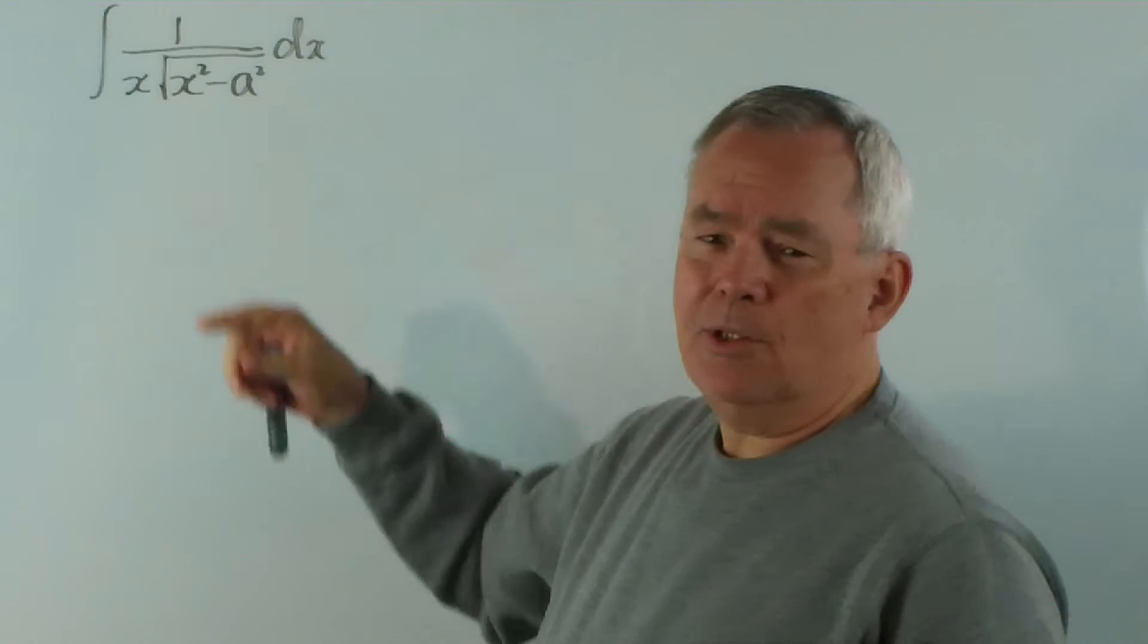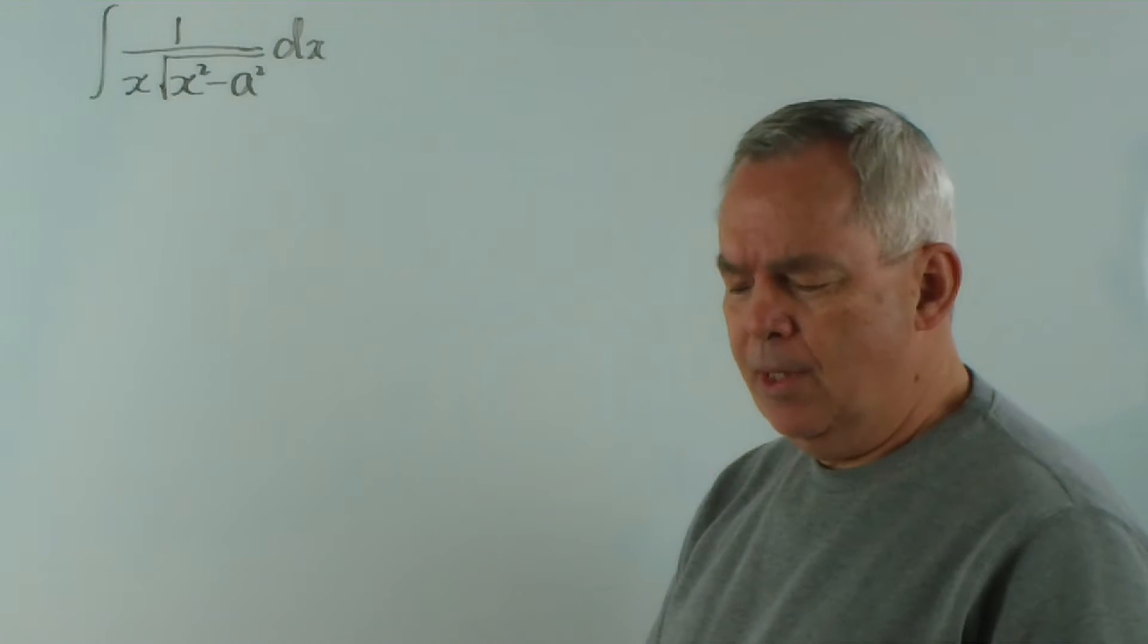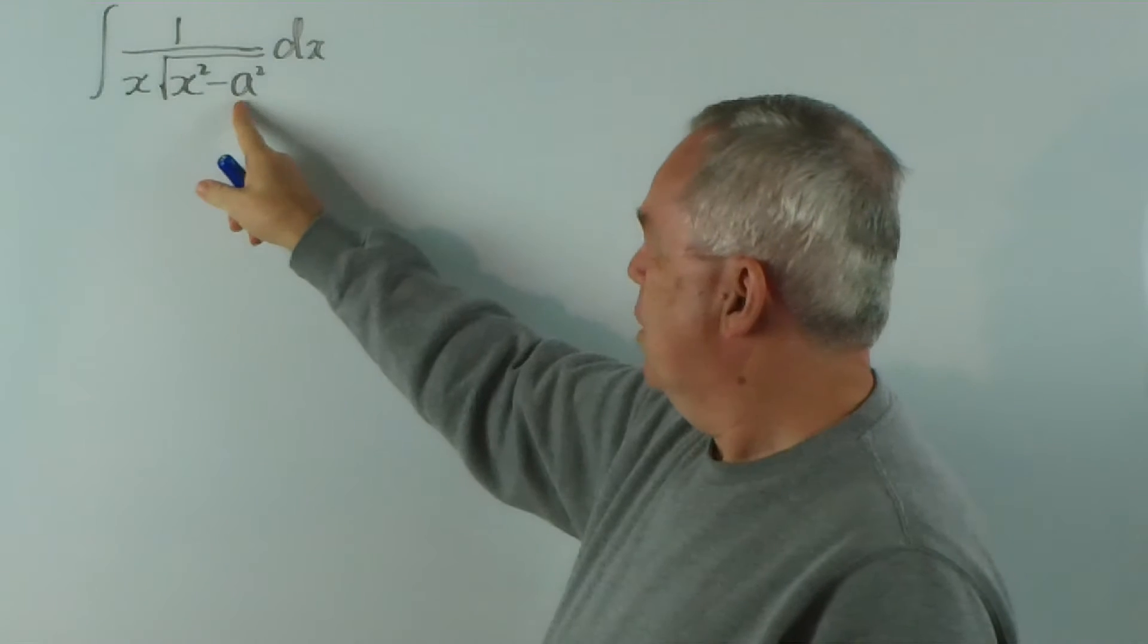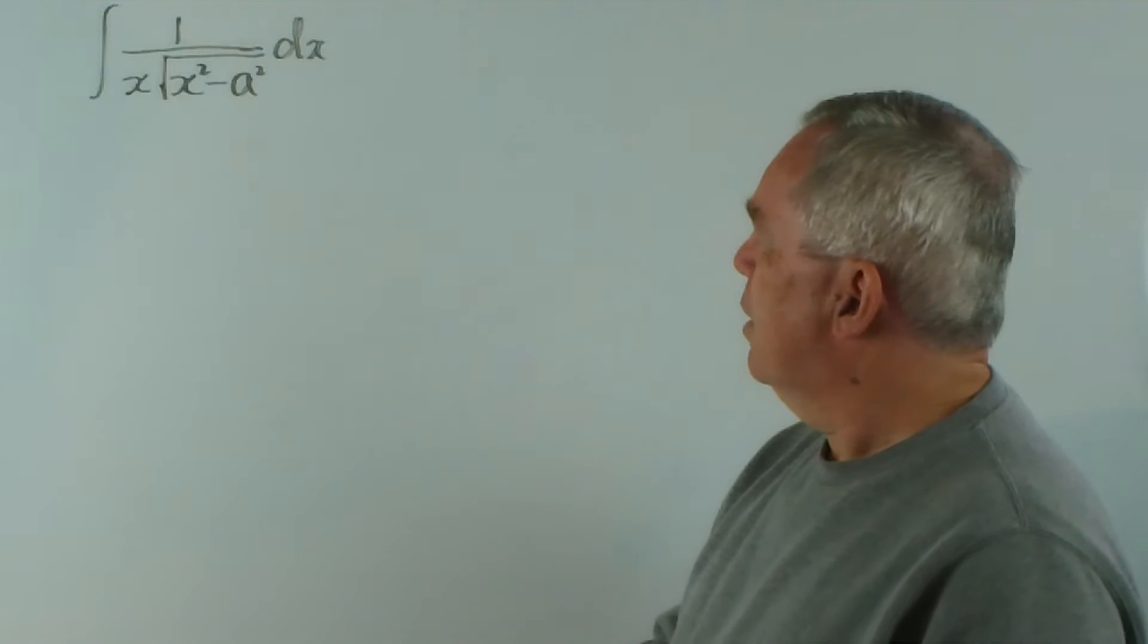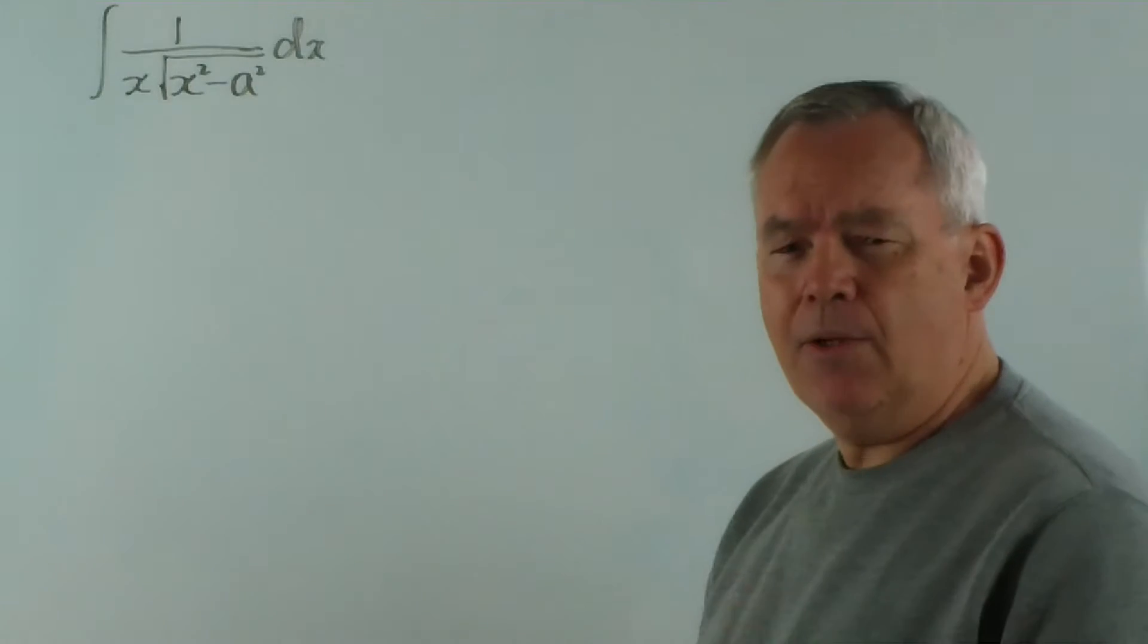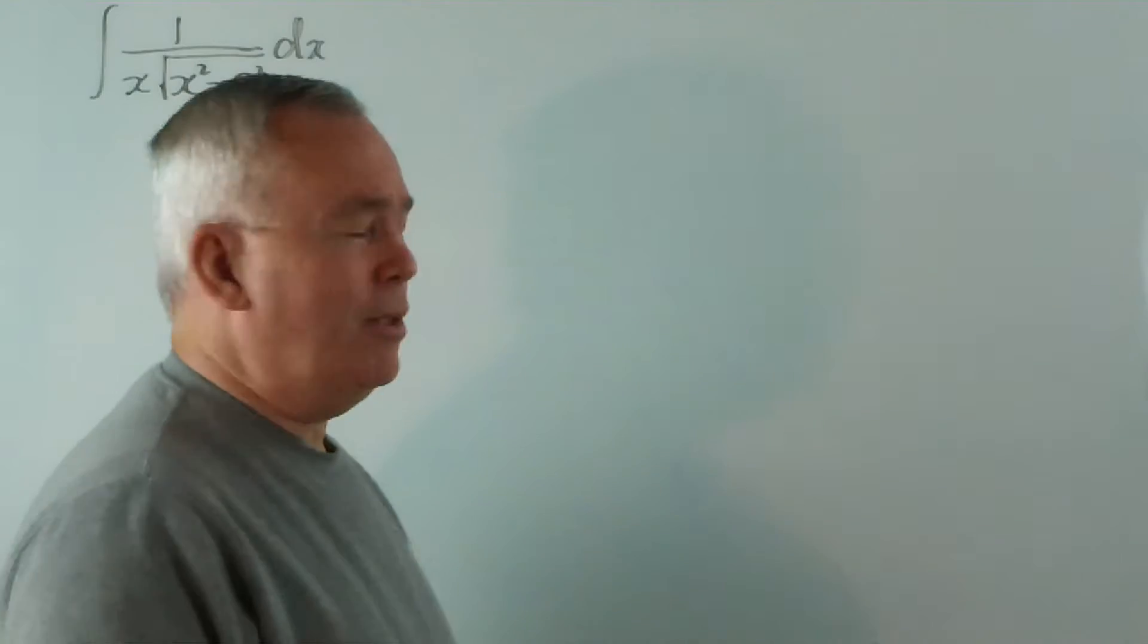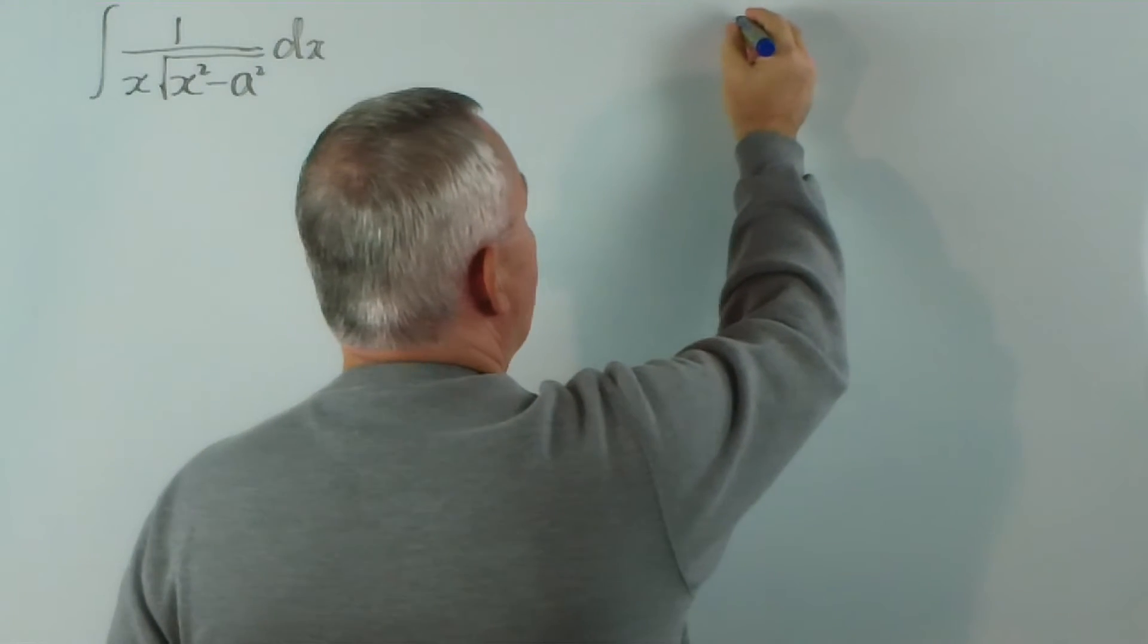You notice it's a difference between squares. And whenever we have a sum or a difference between squares, when we have a square of a constant and a square of the variable, it usually is unlocked using one of our three Pythagorean triads. So I'm going to explain how to choose which one, in case you haven't had that experience.